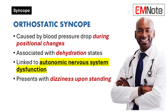Orthostatic syncope arises when rapid positional changes — like moving from sitting or lying down to standing — trigger a sudden drop in blood pressure. Common in dehydrated or autonomic dysfunction patients, this type often presents as dizziness or fainting upon standing. As providers, recognizing postural hypotension during clinical assessment is key to diagnosing this condition.